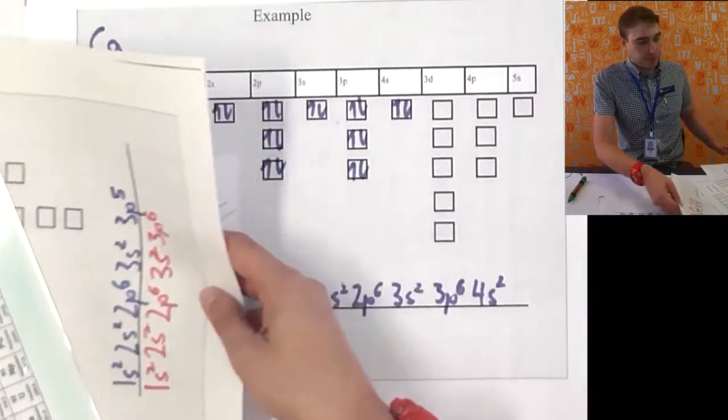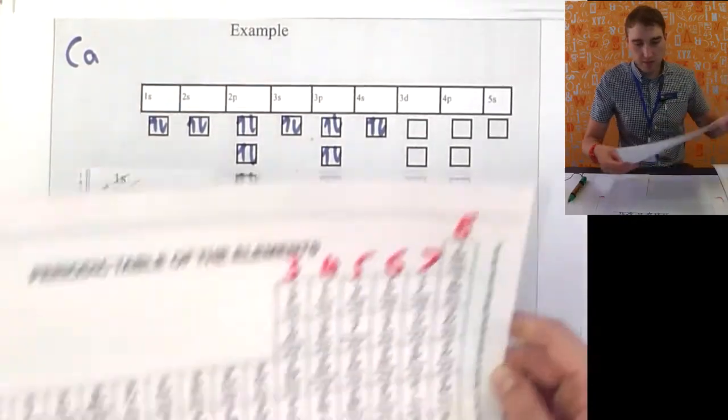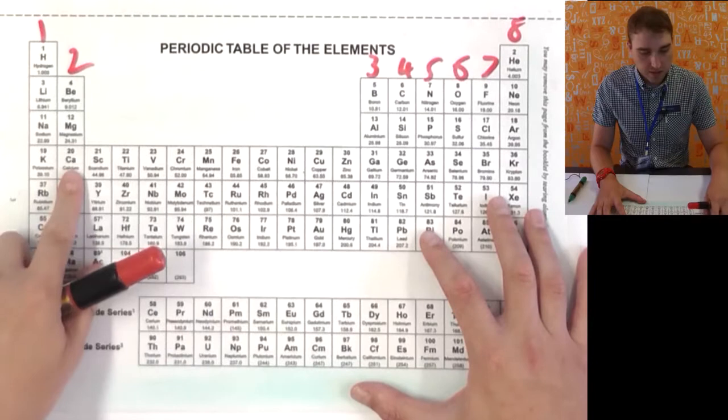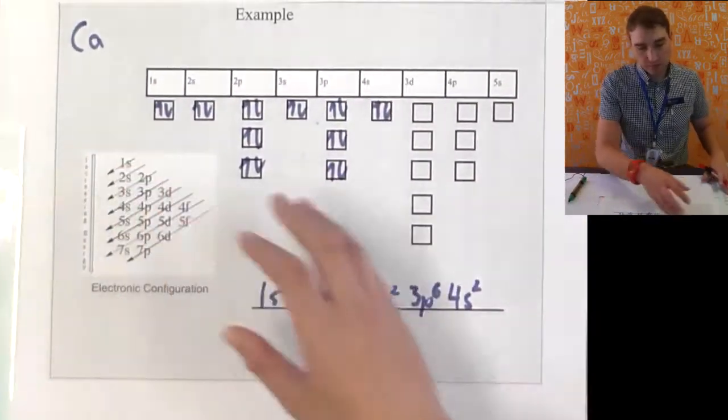Let's look at another example now. We'll look at calcium. I'm working my way up the periodic table. Find calcium on my periodic table. Here it is, number 20. So, I need to put in 20 electrons.